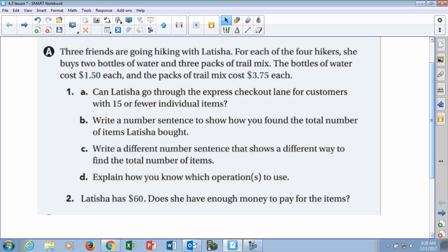In number one, which has four parts, it says can Latisha go through the express checkout lane for customers with 15 or fewer items? Meaning does she have 15 or fewer items? So you're going to figure out how you know, write a number sentence on how you found the total number of items she bought, and write a different number sentence that shows a different way and explain which operation you used.